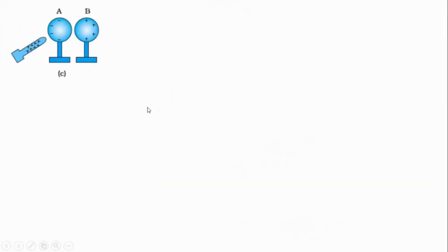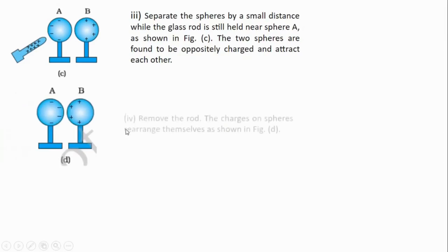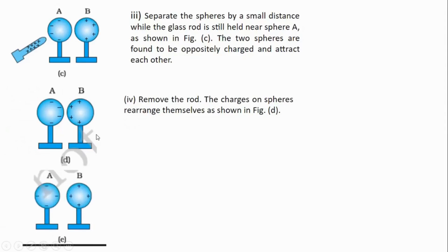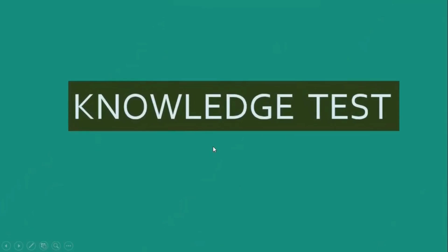If the two spheres are separated, sphere A will still have a negative charge and sphere B will still have a positive charge. If we then remove the charged rod, the charges on the spheres rearrange themselves, and on further separation, the charges get uniformly distributed over them. In this process, the metal spheres will each be equal and oppositely charged. This is the key statement: by the method of induction, metal spheres can be equally and oppositely charged. This question can be asked: how can we charge two metal spheres equally and oppositely? This is possible only by the method of induction.